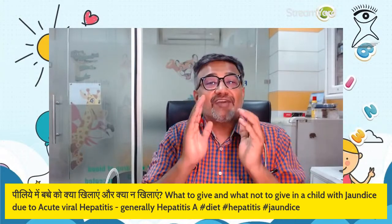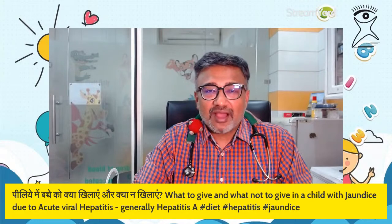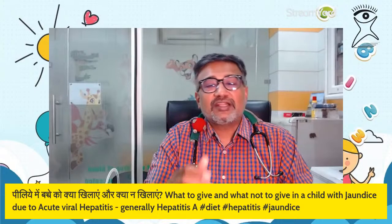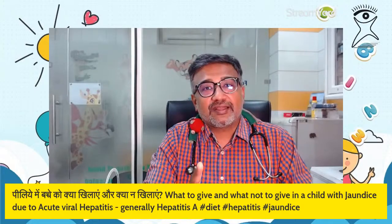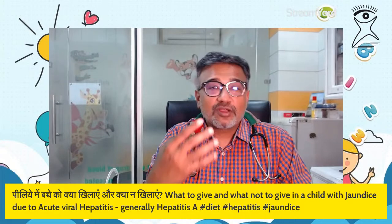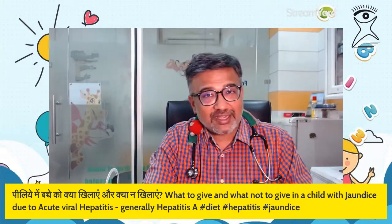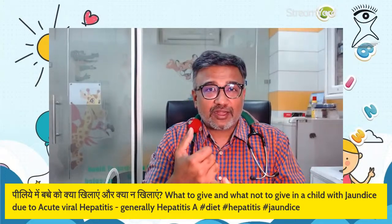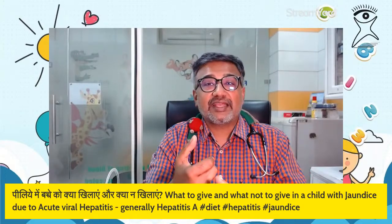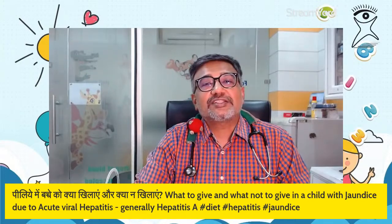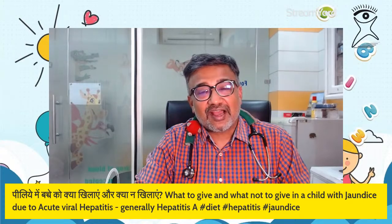Last but not the least, vaccines ka zaroor dhyan rakhen. I always keep telling parents: government ki vaccines bahut achi hain, they are very good, but they are not complete. So at least four vaccines which we recommend for every child that the Government of India aaj ki date mein nahi de rahi hain — hepatitis A, chickenpox, and mumps — yeh vaccines apne pediatrician se zaroor len. Agar aap yeh vaccines lenge toh bachcho ko jaundice ke chances bahut kam ho jayenge.